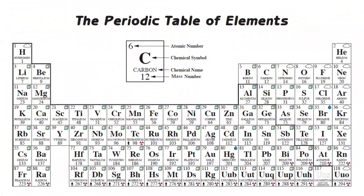I will now switch to my PowerPoint presentation to continue the lesson. The periodic table of the elements lists all the elements present, including the information we know about them as of today. The two features we will be using are the atomic number, written above the element, and the mass number, written under the element.